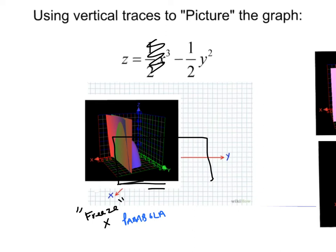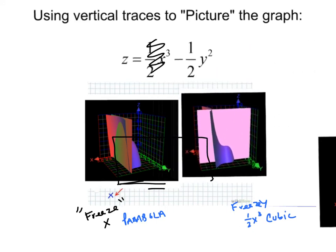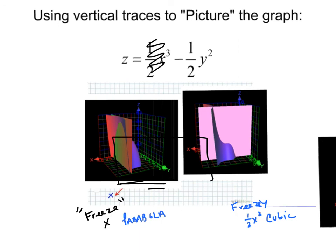Well, then the next thing you should think is, okay, well, what if I froze y instead? Okay, so if you freeze y, then you'd have just one-half x cubed. You should be seeing a cubic function. So, let me show you here. If I freeze y, what happens? So, again, freezing y means I'm just looking at a constant y, and I see a cubic function.